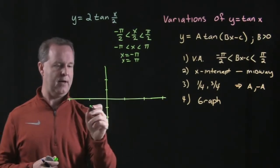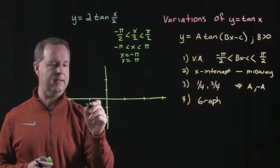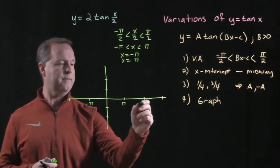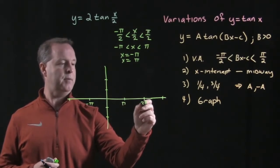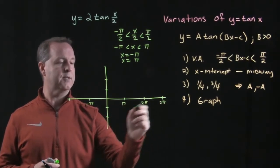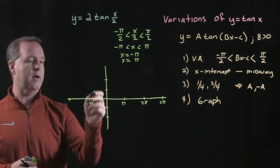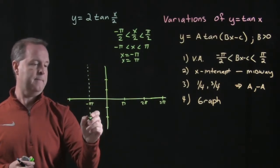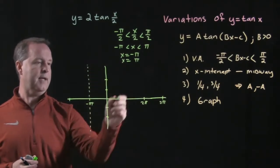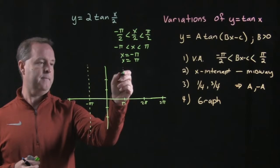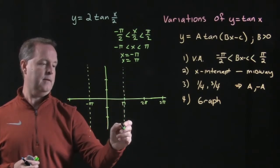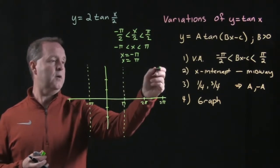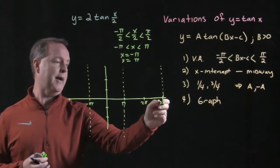So if I were to graph this out, let's mark negative pi, positive pi, 2 pi, 3 pi and so forth. I have a vertical asymptote at negative pi, and then it repeats itself, so I also have a vertical asymptote at 3 pi.